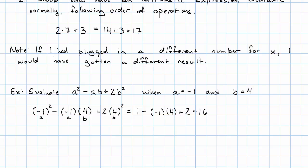No more exponents. Multiplication and division from left to right. So 1 minus negative 1 times positive 4 is negative 4, plus 2 times 16 is 32.